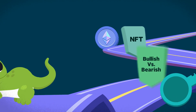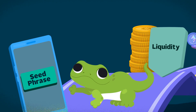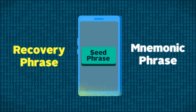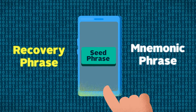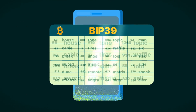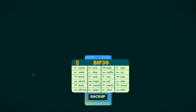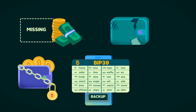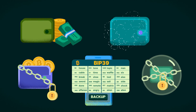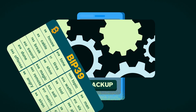Wherever you are in your cryptocurrency journey, you most definitely have heard of a seed phrase, also known as a recovery phrase or a mnemonic phrase, and have probably made use of them. These seemingly random lists of 12 to 24 words serve as a backup to restore access to a wallet, or recover funds in case the wallet is lost, damaged, or inaccessible. But have you ever wondered how they really work?